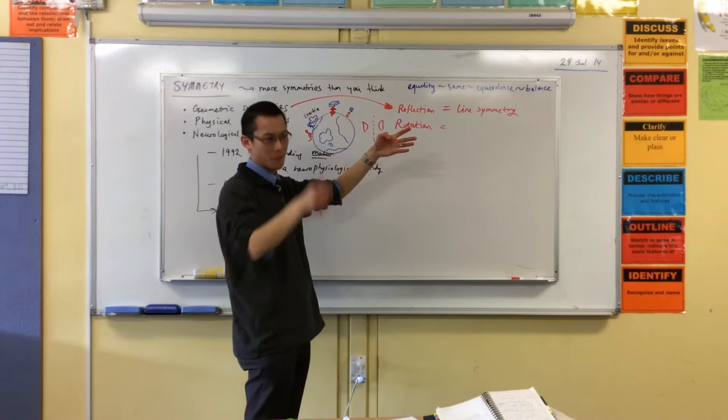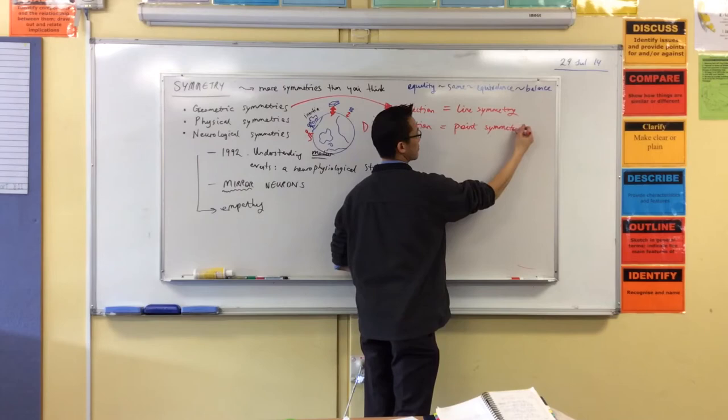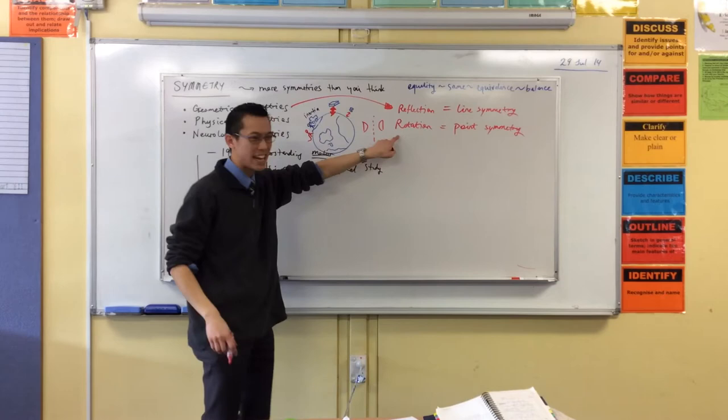Because when you reflect, you reflect across a line, right? But when you rotate, you don't rotate around a line. You rotate around a point, right? Is it like inverse?